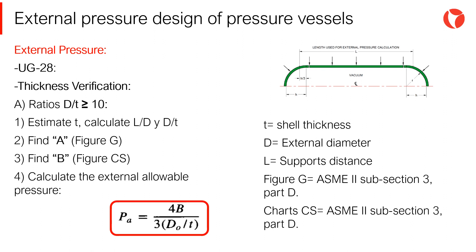Once we obtain those coefficients, we are in a position to determine the allowable external pressure — in other words, the amount of external pressure that the vessel can resist. When vessels are designed for both internal and external pressure, it is common practice to first obtain the shell thickness required for the internal pressure condition and then check that thickness for the maximum level of external pressure.